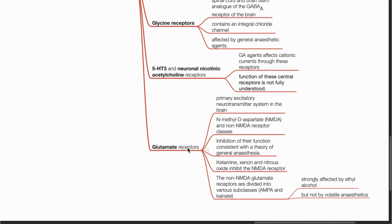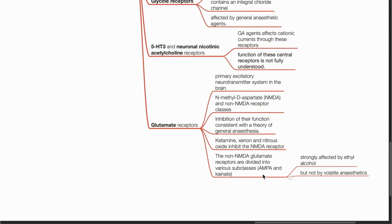Lastly, glutamate receptors are the primary excitatory neurotransmitter system in the brain. They can be classified into NMDA and non-NMDA receptor classes. Inhibition of their function is consistent with a theory of general anesthesia. Ketamine, xenon and nitrous oxide inhibit the NMDA receptor. The non-NMDA glutamate receptors are divided into various subclasses as well. These are strongly affected by ethyl alcohol but not by volatile anesthetics.